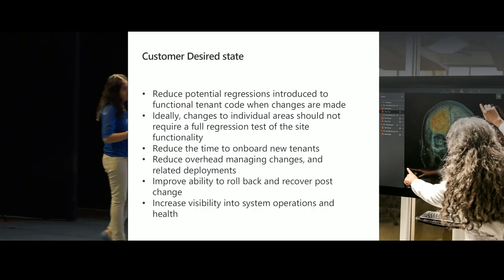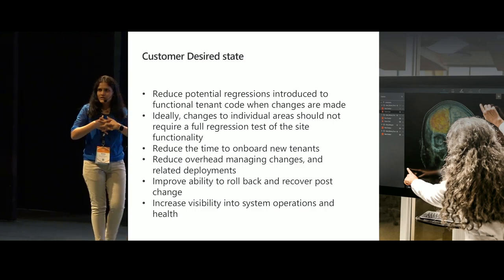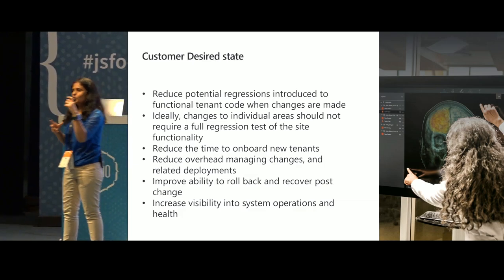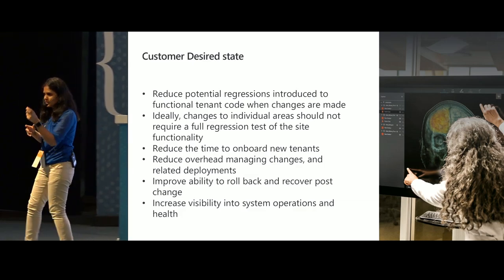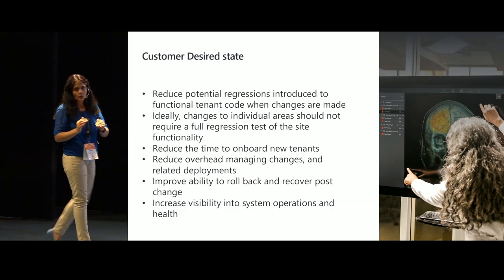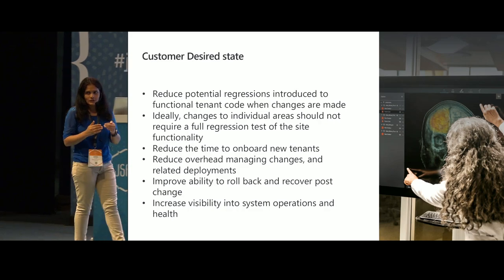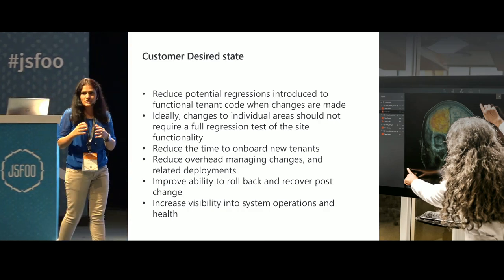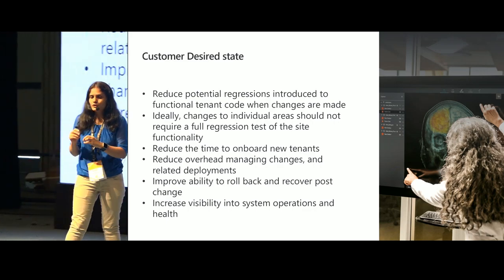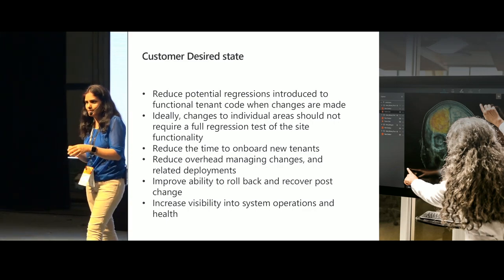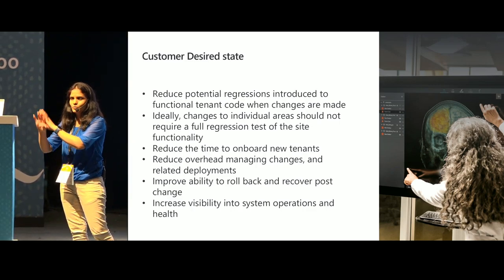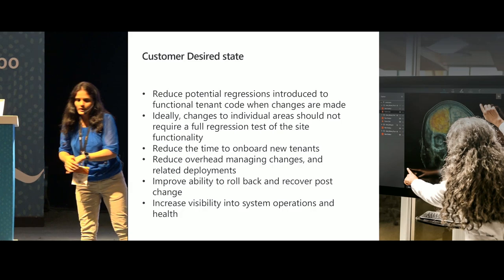Another requirement: if they needed to onboard a new customer today, it should be easy with less time to onboard. Apart from that, any code change for any set of requirements should be deployable quite frequently. It should automatically handle all the testing, final deployment, and monitoring — end-to-end automated. Apart from that, if there is any issue in the production environment, the system should be capable enough to roll back as quickly as possible to the desired version of the code.